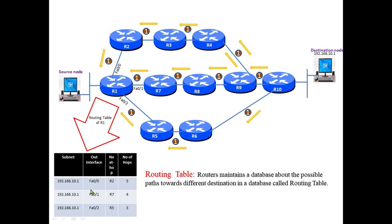The router selects and finds out the best path to go from source to destination with the help of routing. To do that, they follow a routing algorithm, and after gathering all this information, they save it in the routing table.